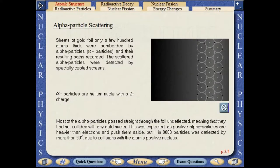Sheets of gold foil only a few hundred atoms thick were bombarded by alpha particles and their resulting paths recorded. The scattered alpha particles were detected by specially coated screens. Alpha particles are helium nuclei with a positive charge.